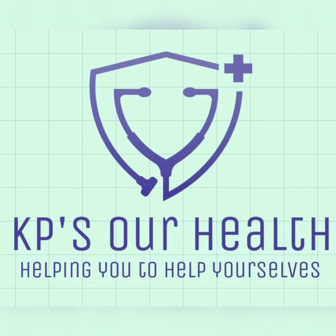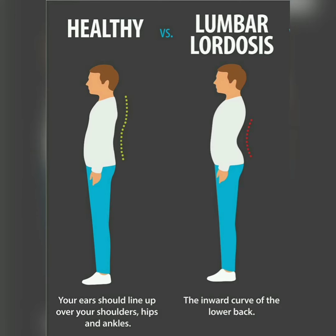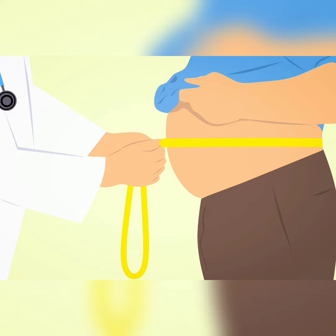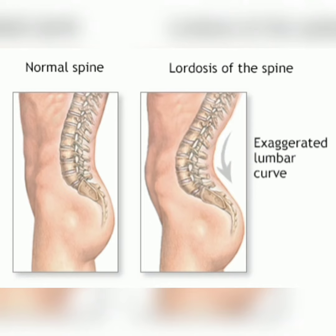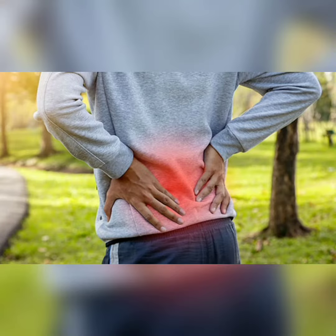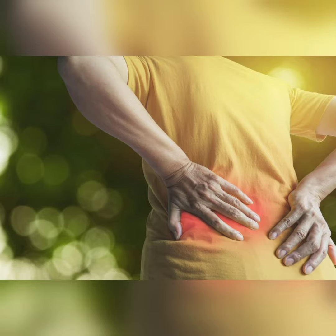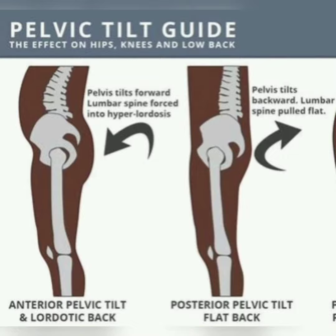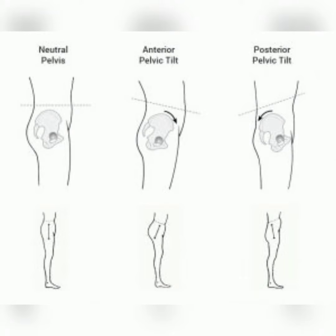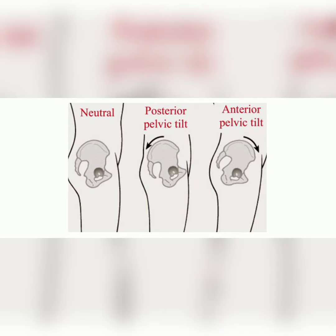Welcome to KP's RHealth. Postural changes and increased abdominal circumference can change the lower back spinal curvature, i.e., increased lumbar lordosis, causing low back pain. Posterior pelvic tilt is a simple and very effective exercise to correct such posture and reduce the back pain.